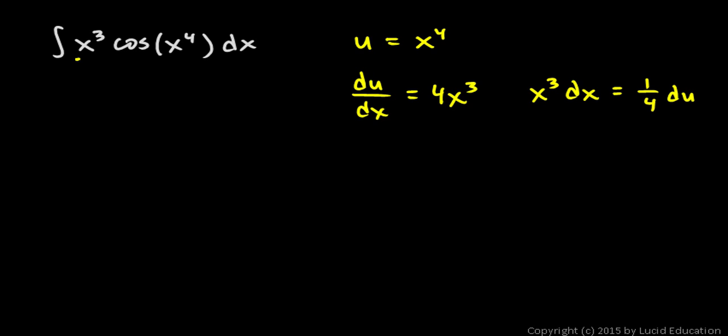And look what we have here. Right here, this is x cubed dx. So what I just underlined right there is 1 fourth du. And then what I have right here, cosine of x to the fourth, that is the cosine of u.